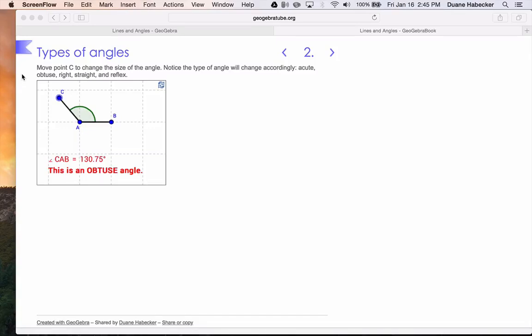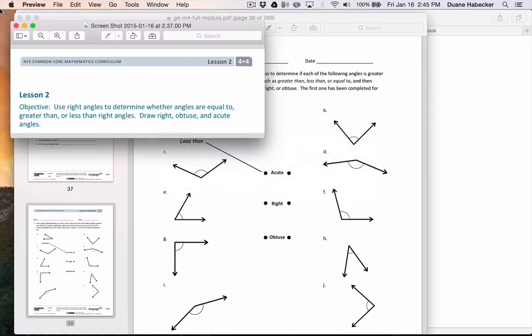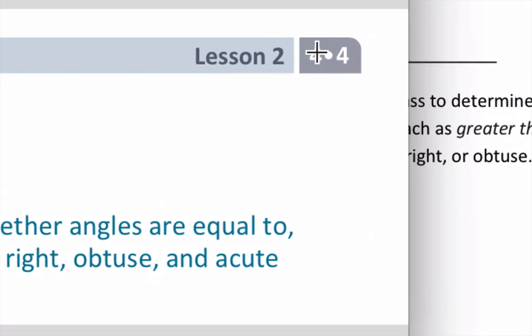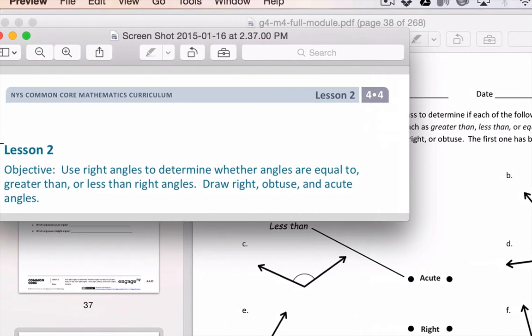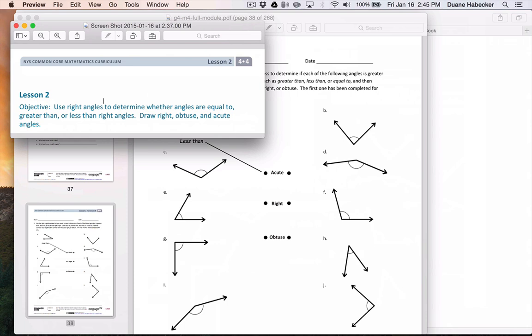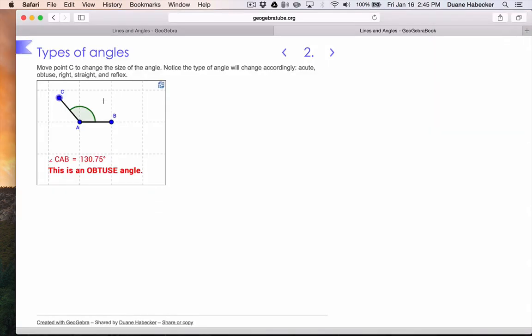This is Grade 4 Module 4 Lesson 2. In this lesson we're going to be learning about right angles and whether angles are greater than or less than right angles. The proper names are right angle, obtuse, and acute angle. We're going to learn about all the different types of angles in this lesson.